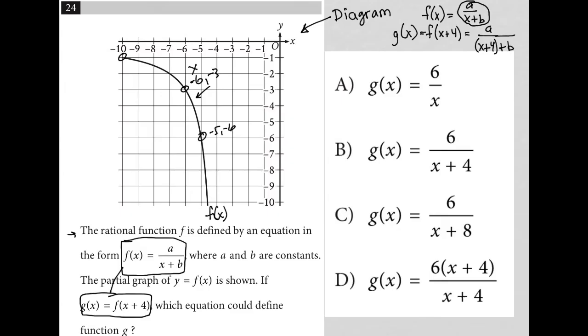That would mean that my a over x plus b would become a over x plus 4 plus b. Simplified, of course, no need for those parentheses. I just have a over x plus 4 plus b. So this is the structure. This is g of x. This is the structure of what my answer should look like.